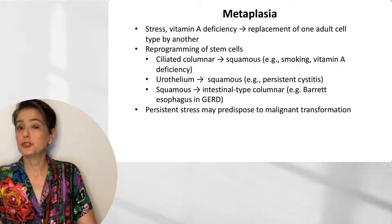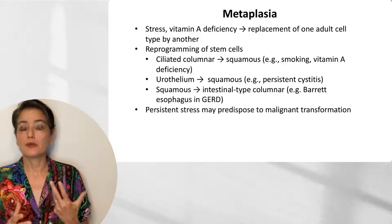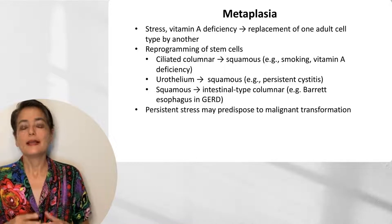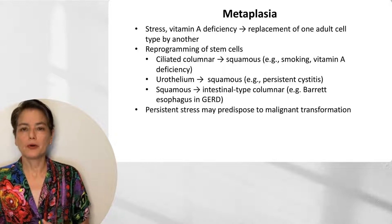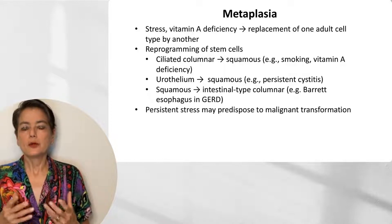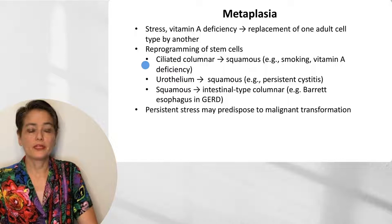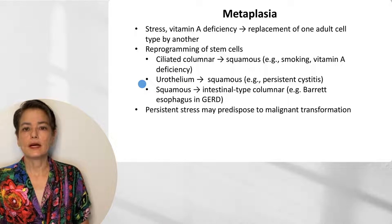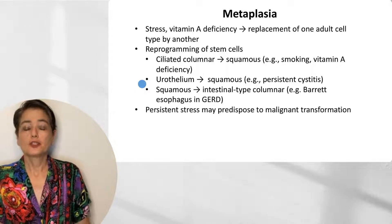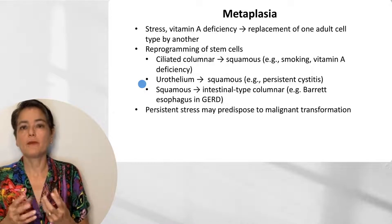Metaplasia is primarily due to stress. What happens is you have one adult cell type which is sensitive to the stress, and then that is replaced by another type of adult cell which is more robust. We can also see metaplasia in vitamin A deficiency. Metaplasia occurs through reprogramming of stem cells. For example, ciliated columnar epithelium in the bronchus can undergo squamous metaplasia in response to toxins in cigarette smoke or due to vitamin A deficiency. In the bladder, we can get squamous metaplasia due to persistent cystitis — for example, in areas of the world where schistosomiasis is endemic, you can get squamous metaplasia in response to the irritation from those cysts in the bladder.